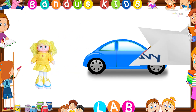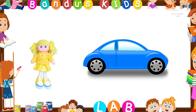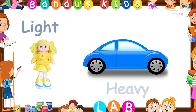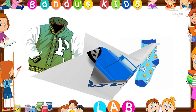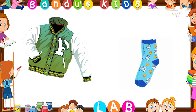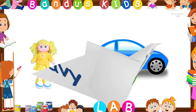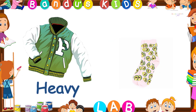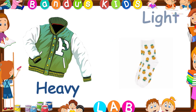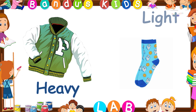Kids, which one is the light one here? You are right. Here, the doll is the light one and the car is the heavy one. What about this one? Which one is the heavy one? That's right, it is the jacket. Here, the jacket is the heavy one and the socks is the light one.